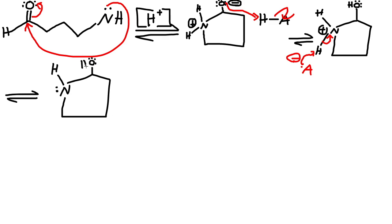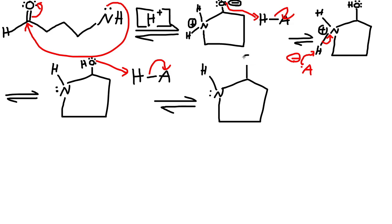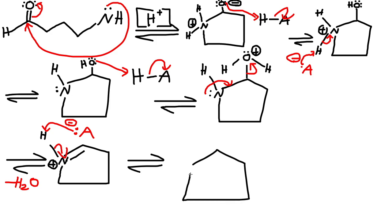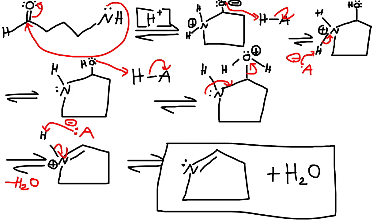Nitrogen now has a lone pair. The acid comes again, and now we have water as a leaving group. We form a double bond with nitrogen and kick off the water — this is the loss of water step. We have the double bond, positive charge on nitrogen, and water is kicked off. The acid comes one last time to grab the hydrogen and give it to nitrogen. The final product is a cyclic imine — it looks a bit unusual but we still formed it.